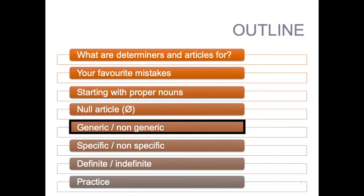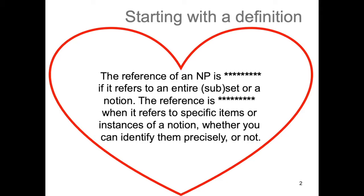We're going to explain more clearly what the difference between generic and non-generic reference is. The reference of a noun phrase is generic if it refers to an entire set, subset, or a notion. The reference is non-generic when it refers to specific items or instances of a notion, whether you can identify them precisely or not. This definition must be learned by heart.